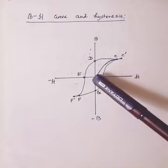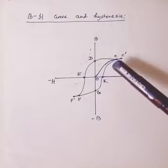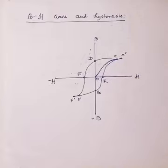First we will be analyzing the part OC of the curve. Now in this part what we are doing actually is H is increased from zero, then we see that if we increase H from zero gradually B increases along the curve OC.